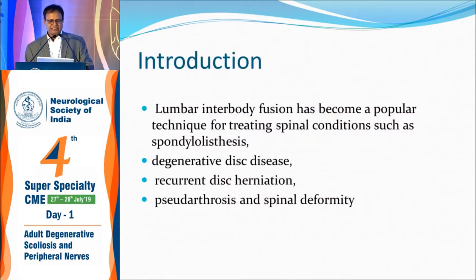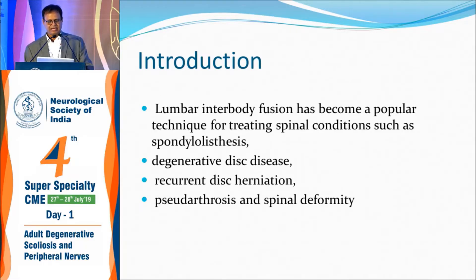The common indications are degenerative spondylolisthesis grade 1 or 2 — not 3 and 4 — degenerative disc disease, recurrent disc herniation, or a failed disc. A failed disc with scoliosis carries a higher risk of root damage in posterior surgery because the anatomy is lost due to epidural fibrosis. Doing an anterior surgery becomes easier as it is a virgin area, as well as in cases of pseudoarthrosis or spinal deformity.